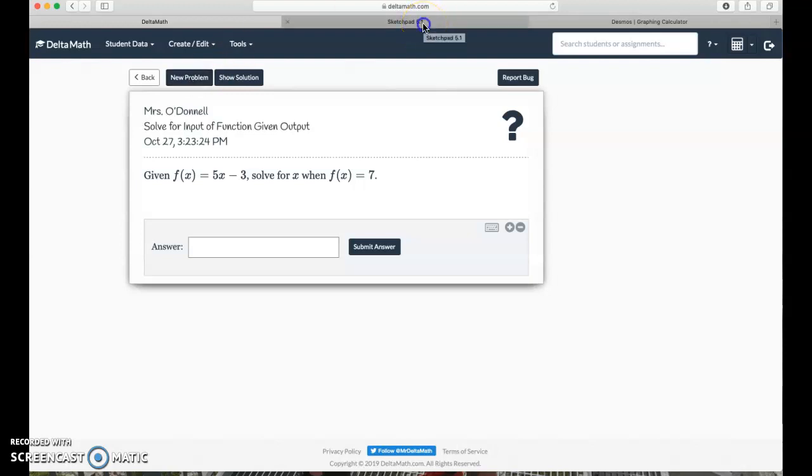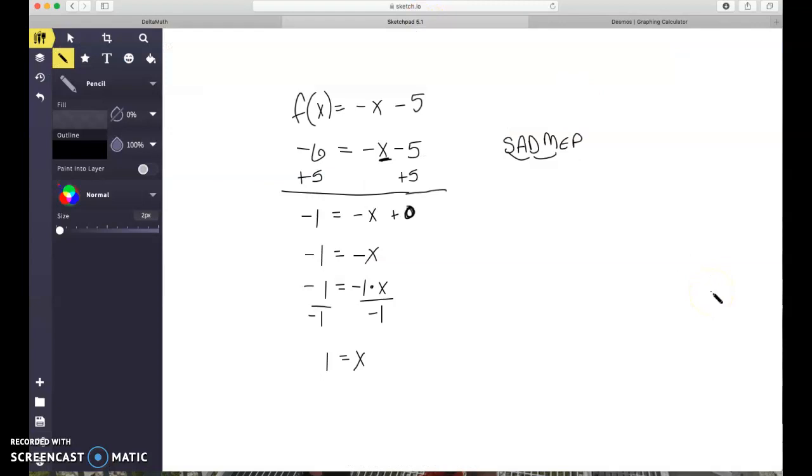So we have f(x) equals 5x minus 3. 5x minus 3. And they want to know what is our input when the output is 7, right? So my output is 7, 5x minus 3. So solving this, I'm going to do my inverse operations to get rid of things that are attached to my x. The first thing I'm going to get rid of is that minus 3 because that's in my added or subtracted category. I'm going to do the opposite of minus 3, which is plus 3.